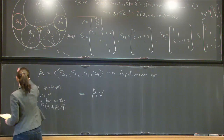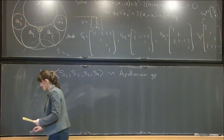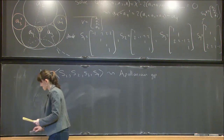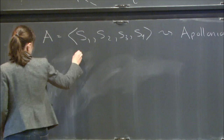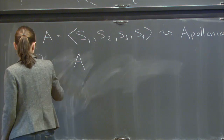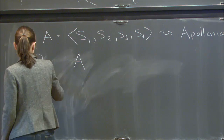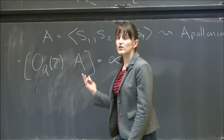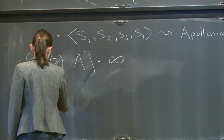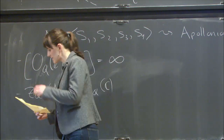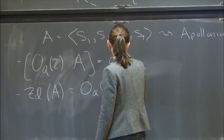Let me write down key properties of the Apollonian group A. First, the fundamental domain has infinite volume, and the index of A in O_Q(Z) is in fact infinite — so it is a small group in that sense. But it is large in an algebraic sense: the Zariski closure of A (in GL_N(C)) is the full orthogonal group. These two things together tell us that A, the Apollonian group, is a thin group.